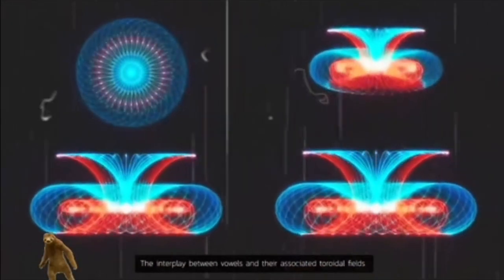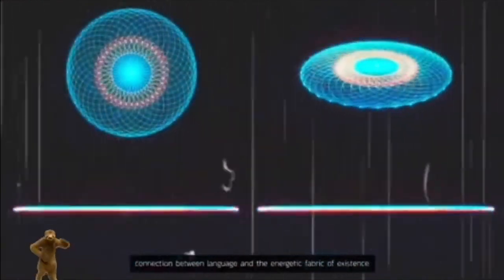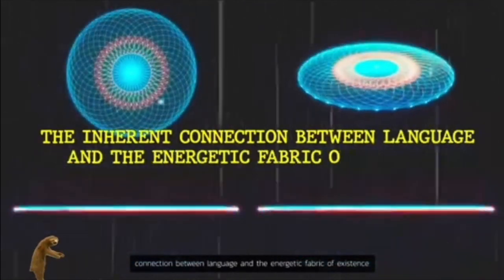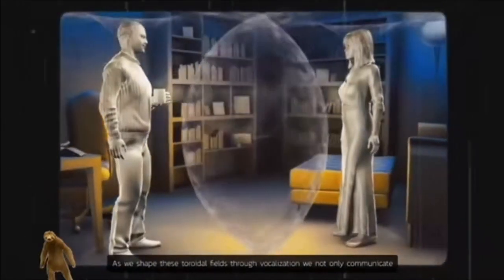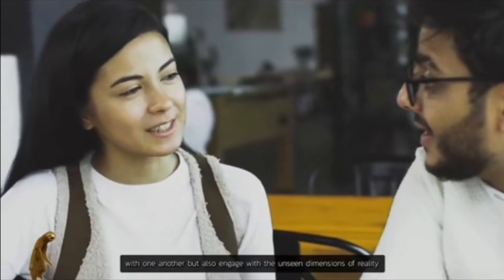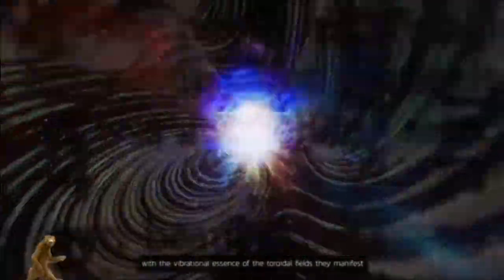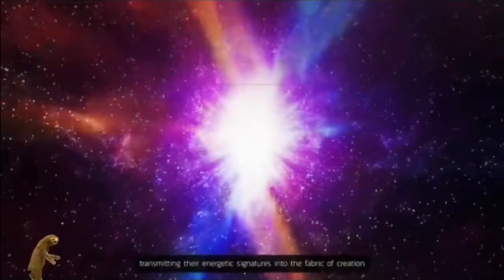The interplay between vowels and their associated toroidal fields serves as a profound reminder of the inherent connection between language and the energetic fabric of existence. As we shape these toroidal fields through vocalization, we not only communicate with one another, but also engage with the unseen dimensions of reality. Our words become imbued with the vibrational essence of the toroidal fields they manifest, transmitting their energetic signatures into the fabric of creation.